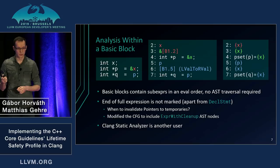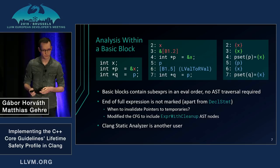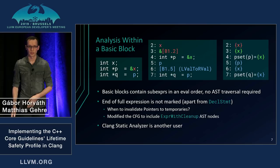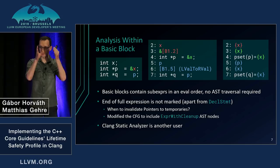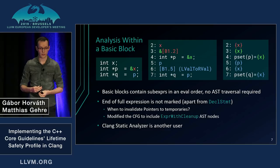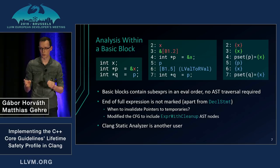Let me walk through the mechanics of how this propagation works if you look at a single continuous sequence of statements. In the left column we see C++ code. In the middle column we see the linearized control flow graph of Clang, which is built from the AST by putting all the AST expressions in an order that is a valid evaluation order. In the right column you see the points-to sets assigned to every expression. There are very mechanical rules for how the points-to set of an expression is calculated based on the points-to sets of its sub-expressions.